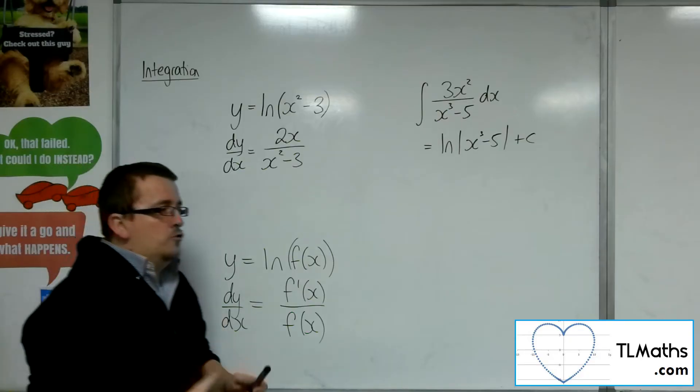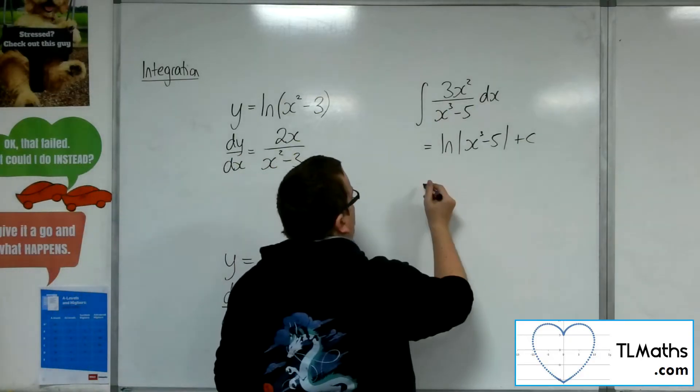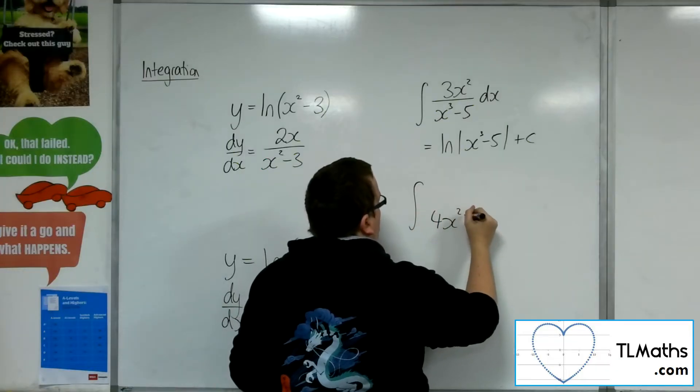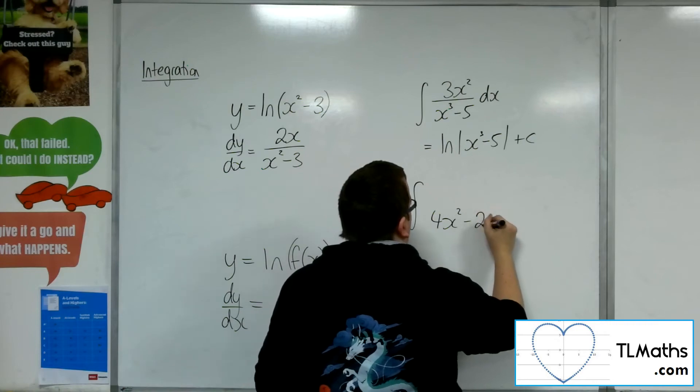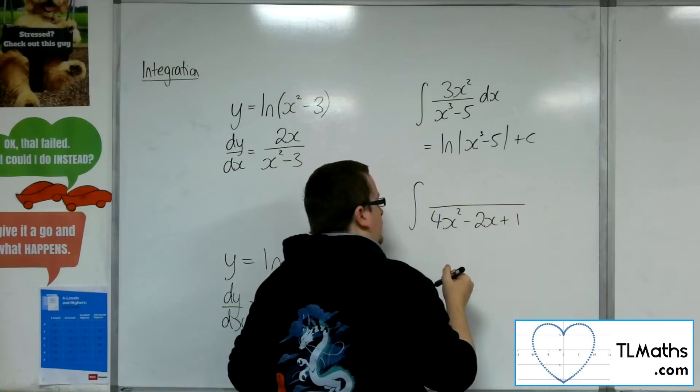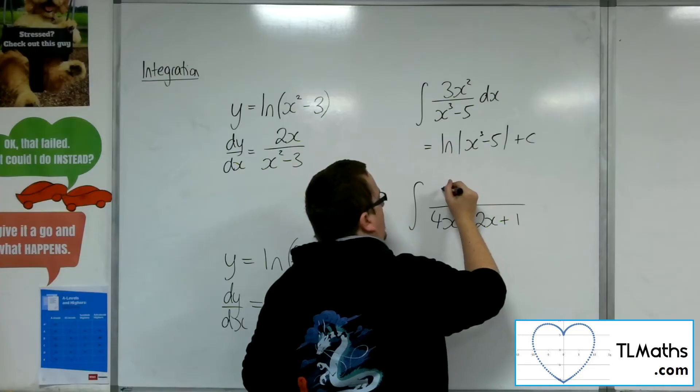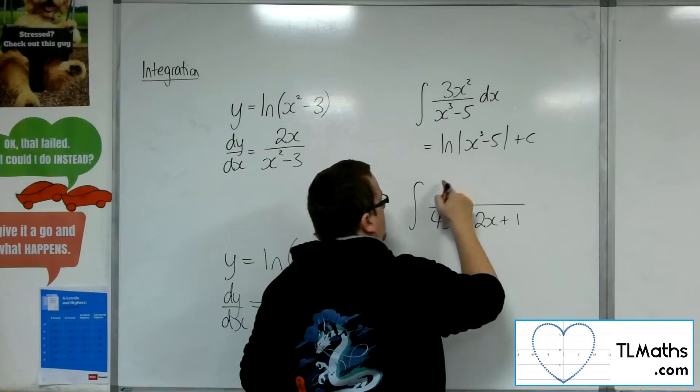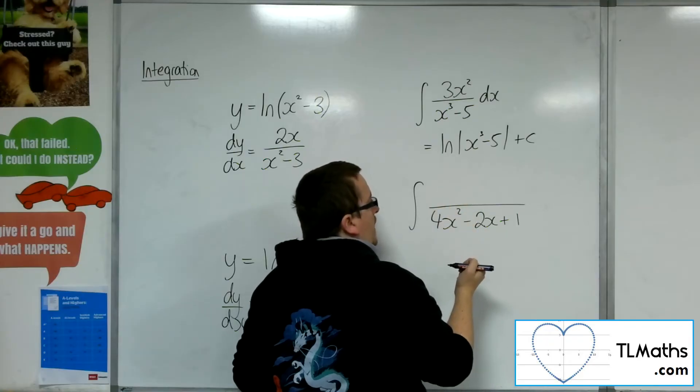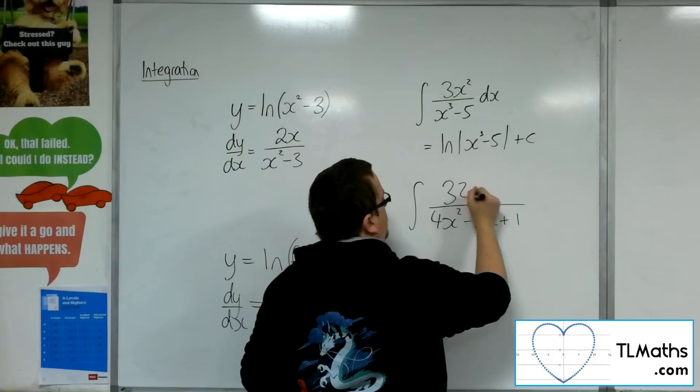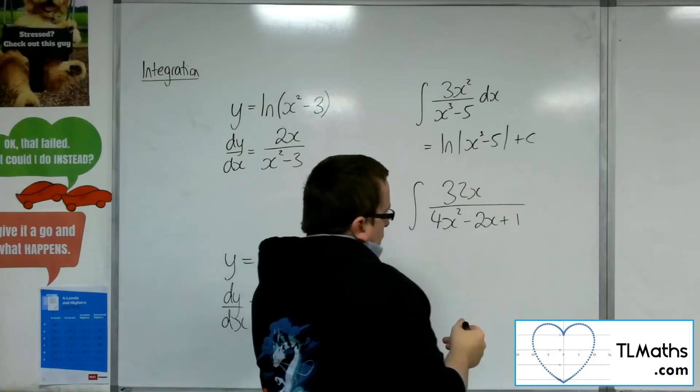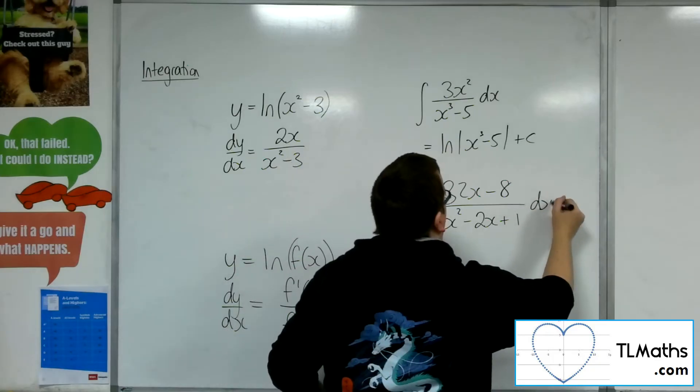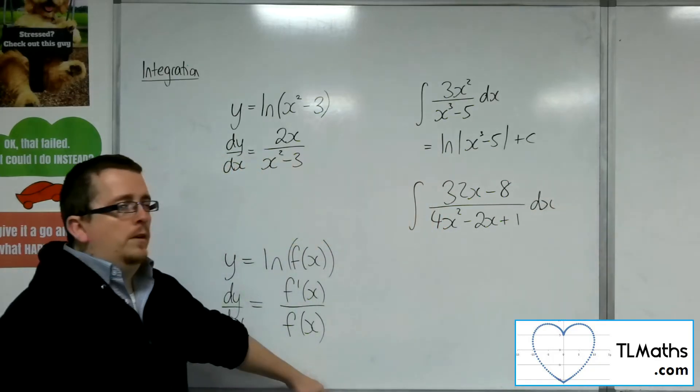So another example would be something like, let's say I've got 4x squared minus 2x plus 1 in the denominator, and I had, just trying to do everything in my head, 32x take away 8 in the numerator.